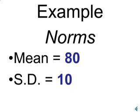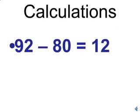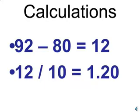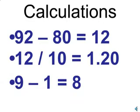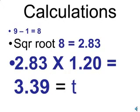Let's look at another example using the same norms: a mean of 80 and a standard deviation of 10. This time our sample size of 9 had a sample mean of 92. We take 92 minus 80 for a numerator of 12, then divide by the standard deviation of 10 to get 1.2. Our degrees of freedom are 8, with a square root of 2.83. Multiplying 2.83 times 1.2 gives a t-score of 3.39.